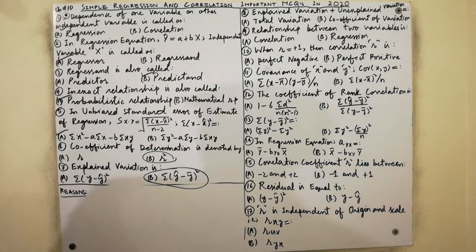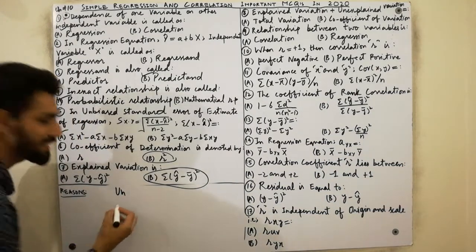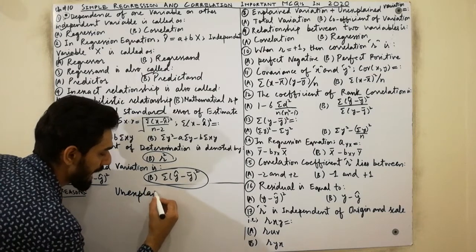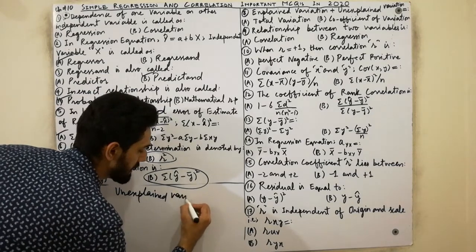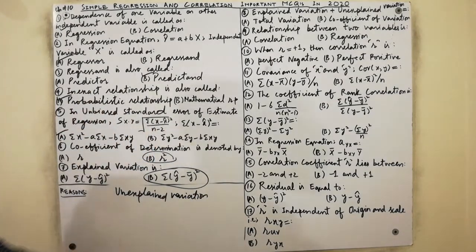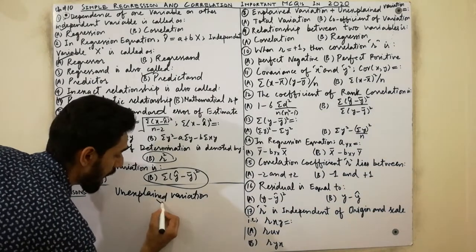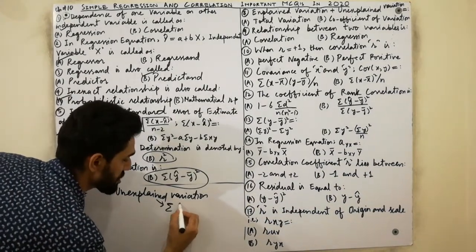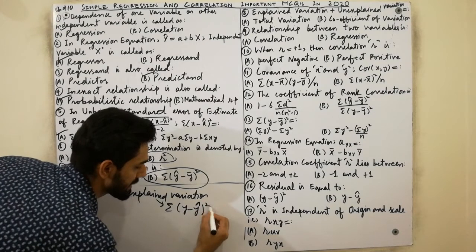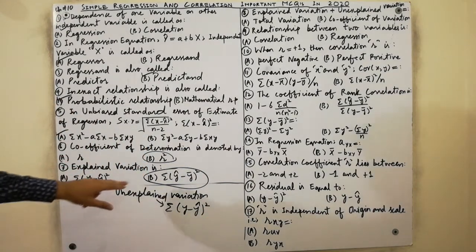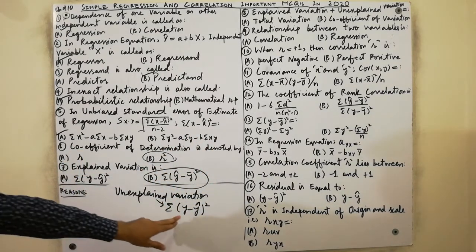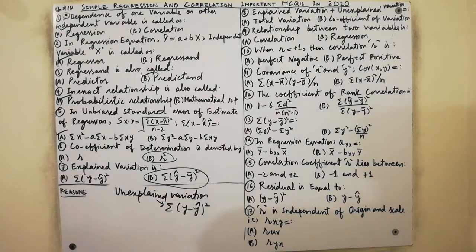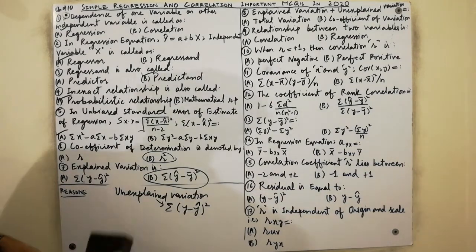Unexplained variation is equal to Σ(Y − Ŷ)². Must remember: explained variation = Σ(Ŷ − Ȳ)², and unexplained variation = Σ(Y − Ŷ)². I hope that clears the concept.